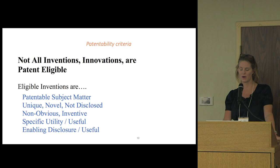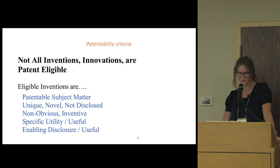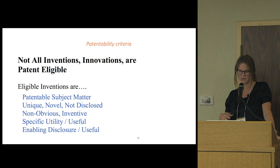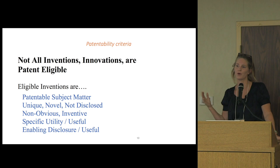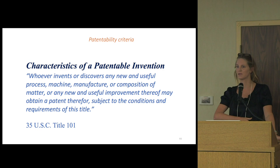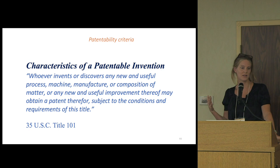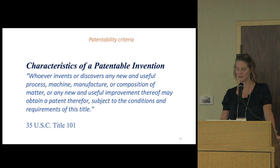From US law: whoever invents or discovers a new and useful process, machine, manufacture, composition of matter, or an improvement can obtain a patent. That gives you a sense of some of the kinds of things that are patentable. In practice, our concept of this is actually much broader and comes from court decisions since the 1930s, which have refined these ideas and established how they get implemented in practice.